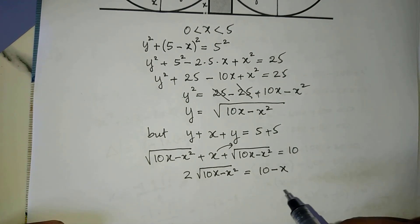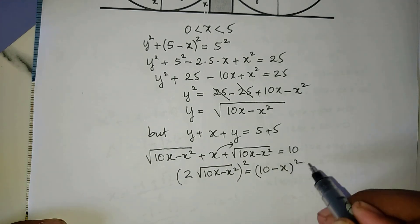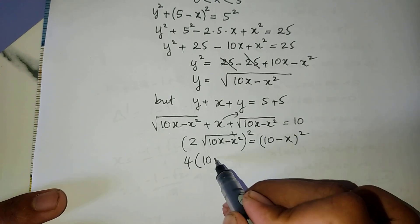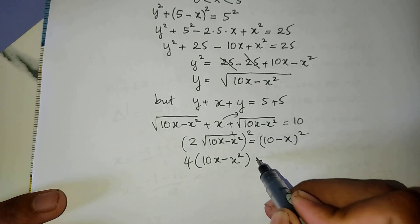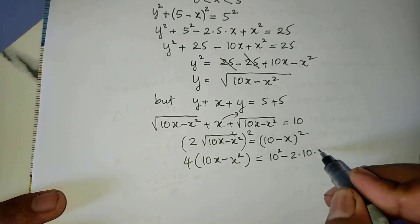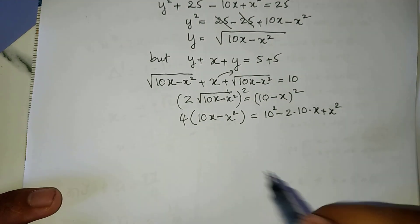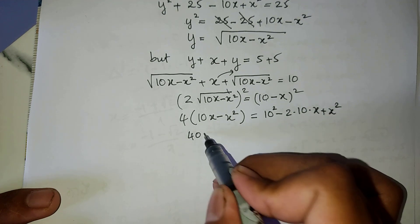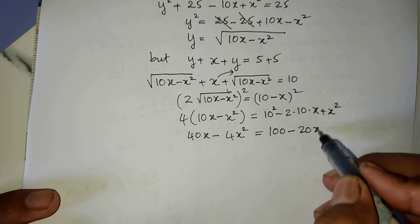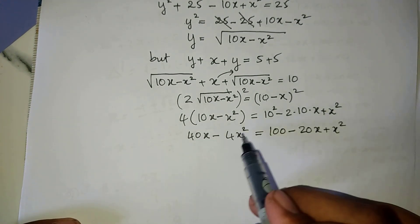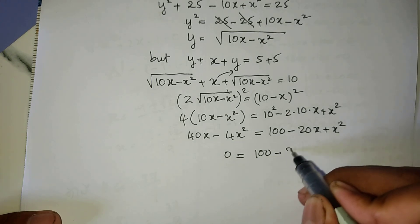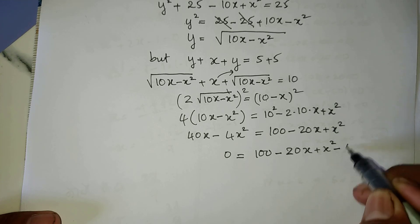Rearranging, we get 2 times square root of (10a minus a squared) equals 10 minus a. Squaring both sides: 4 times (10a minus a squared) equals (10 minus a) squared. Expanding the right side: 100 minus 20a plus a squared. So 40a minus 4a squared equals 100 minus 20a plus a squared.